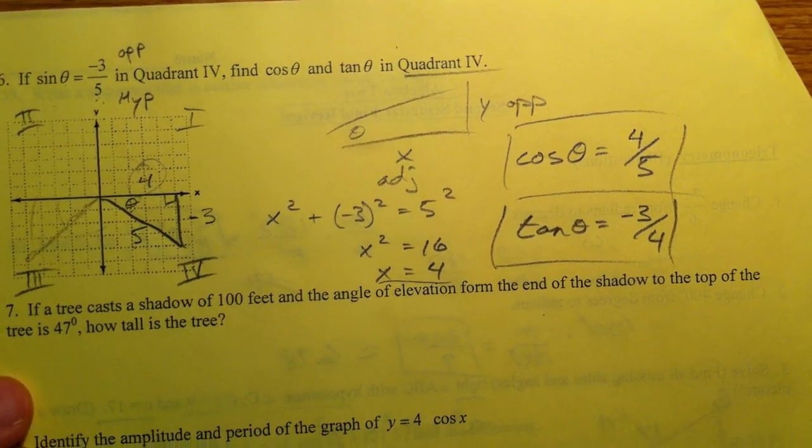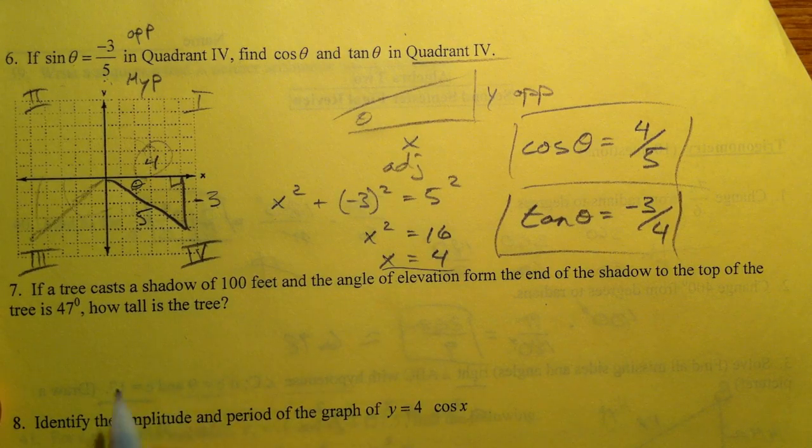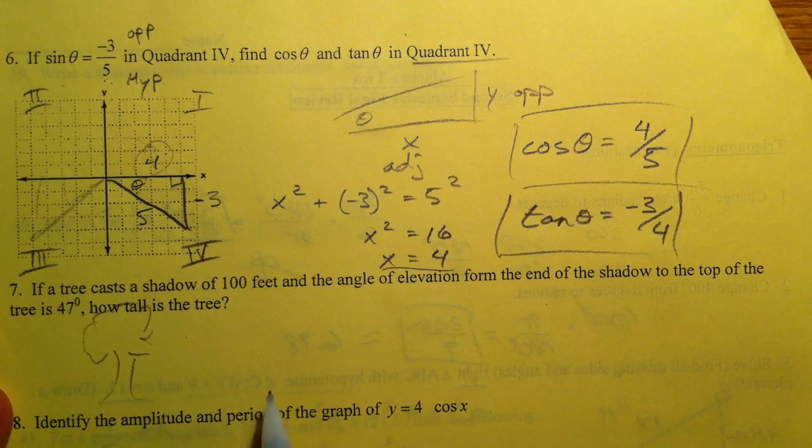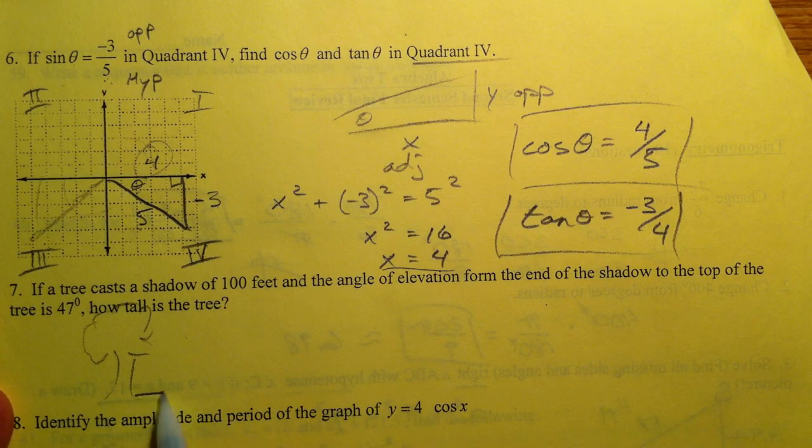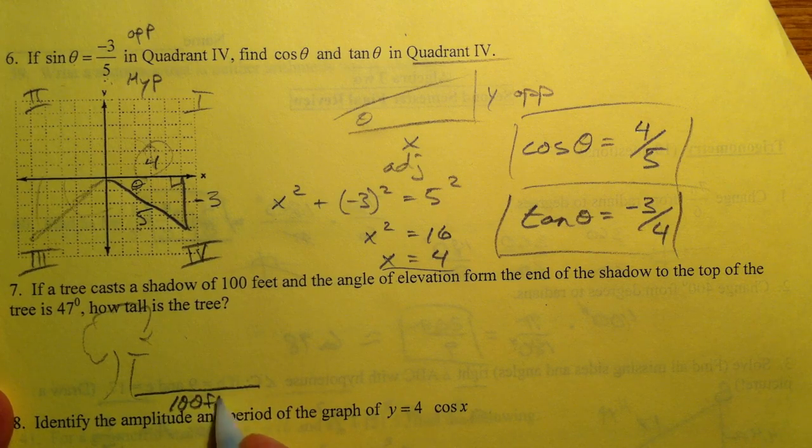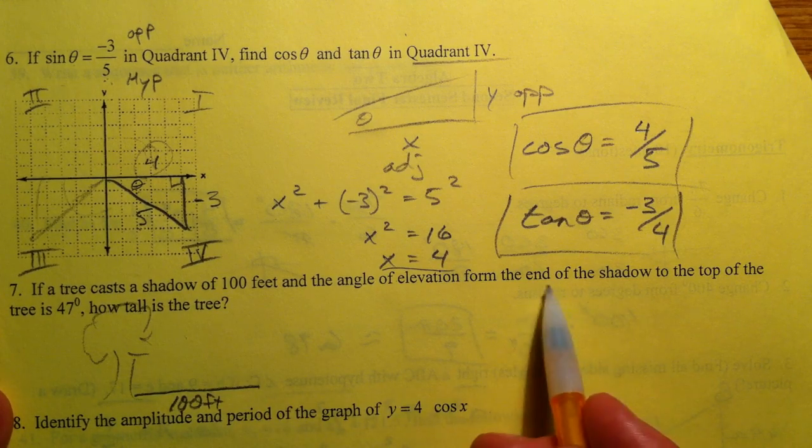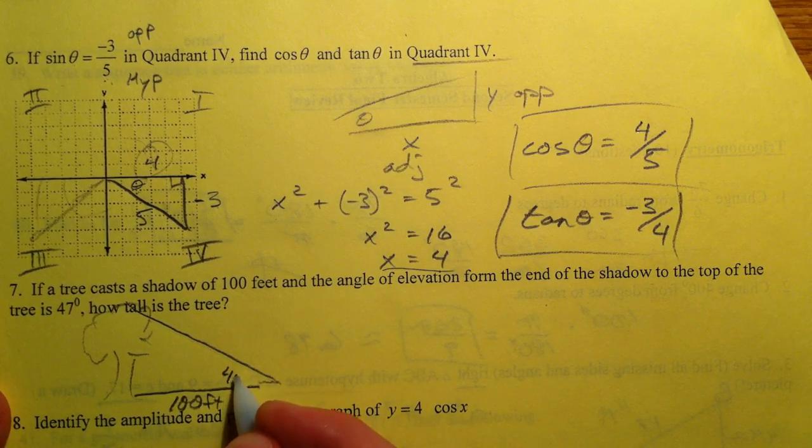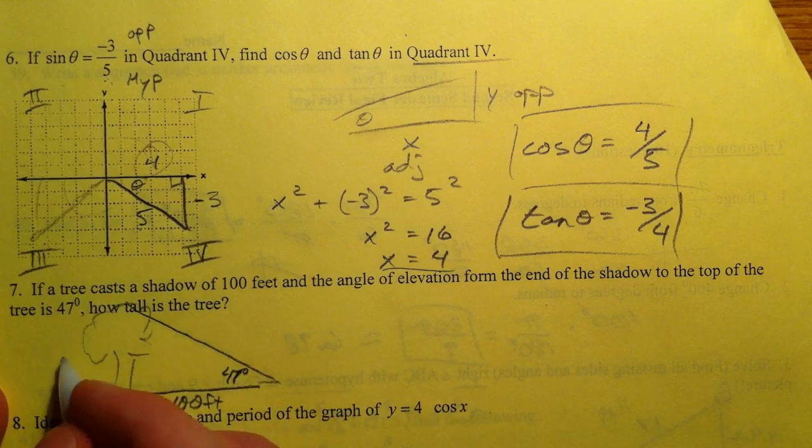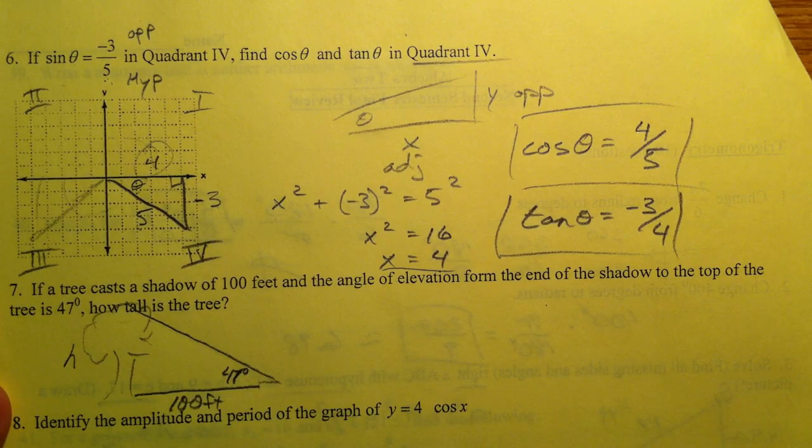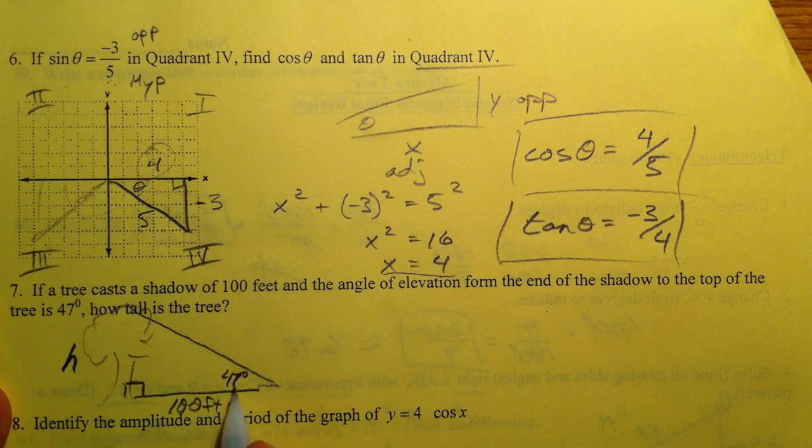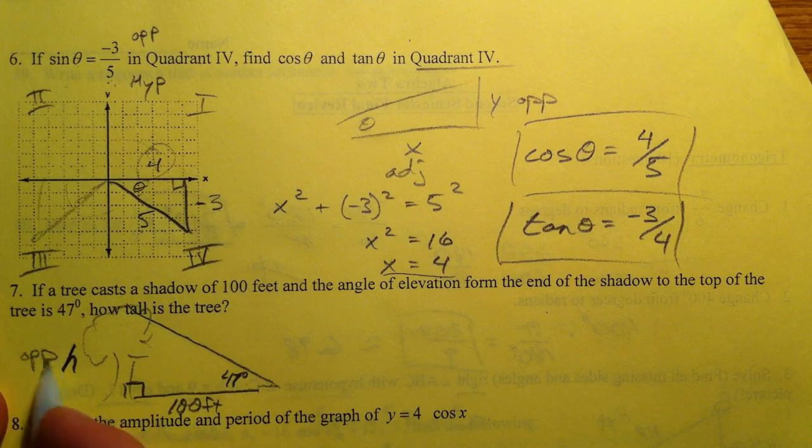Alright, a tree casts a shadow of 100 feet. So we've got a tree. 100 foot shadow. Shadows go on the ground. Angle of elevation from the end of the shadow to the top of the tree. And so getting your picture down is half the battle. We want to know how tall is the tree. So I'm going to call it h. Assuming the tree is standing up straight...